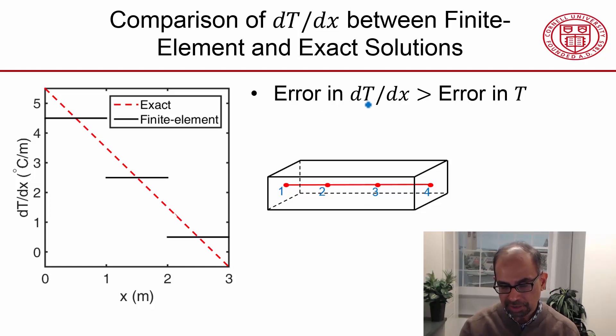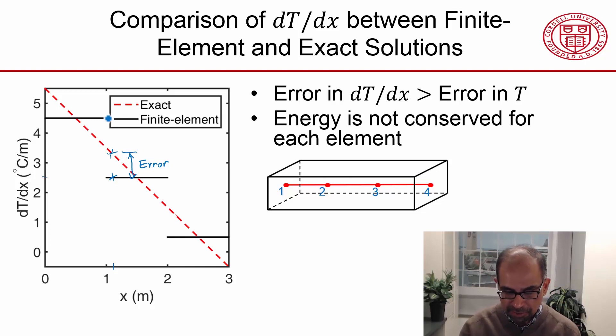And it turns out that the error in the derivative is greater than the error in the temperature itself. To see that, if I look at the error at a location like that, the finite element solution says that the dT/dx is that value here, whereas the exact solution says it's that value. And that difference is an error. And then at the nodes, the derivative is discontinuous, which is a problem, but we can live with that problem.